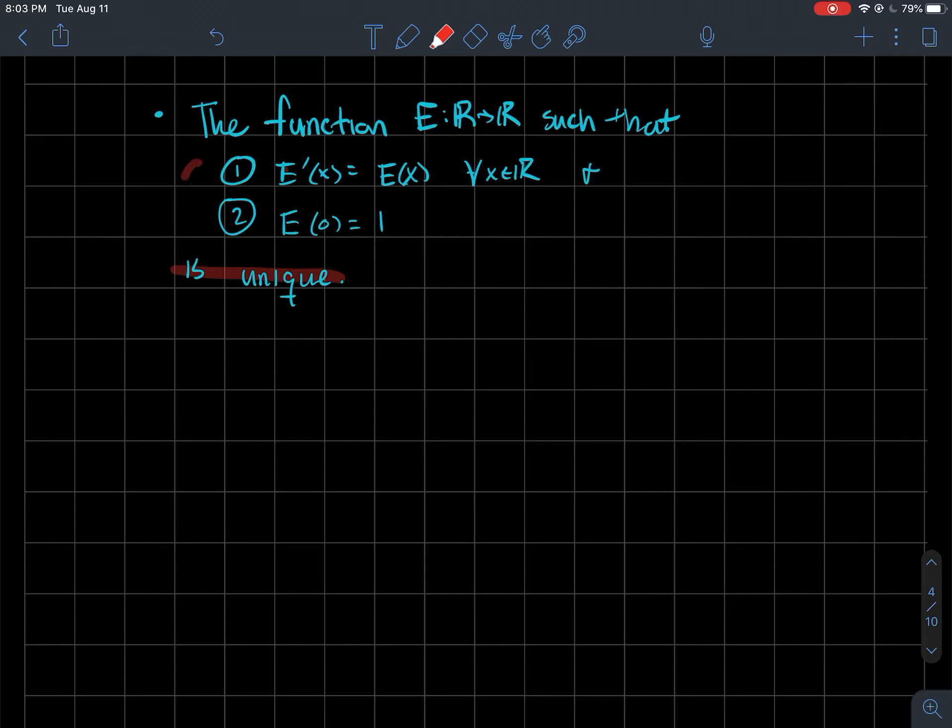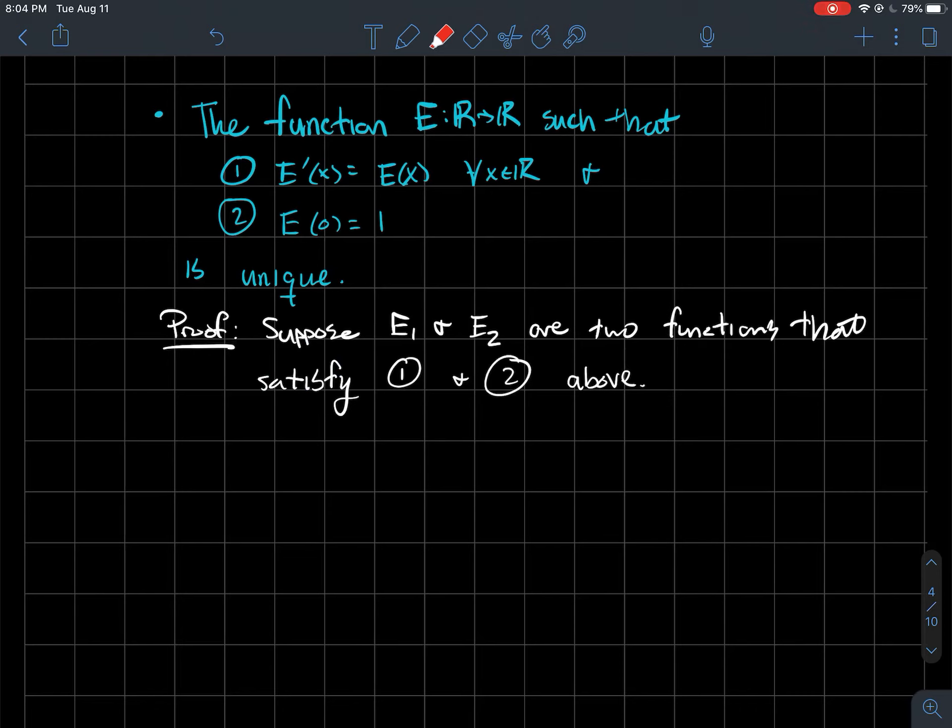We're going to try to show that this function E that satisfies these two properties here is unique. So typically how you do a uniqueness proof to show a function is unique: let's say you had two of them, and what we're going to try to do is a whole bunch of work to show that E1 and E2 are in fact the same.